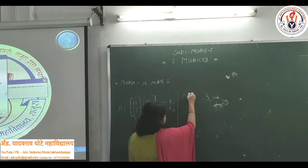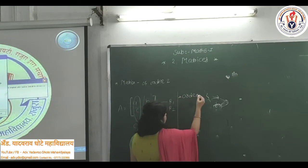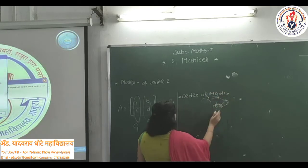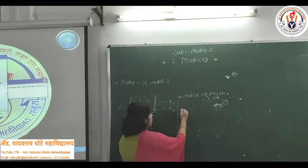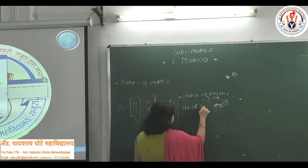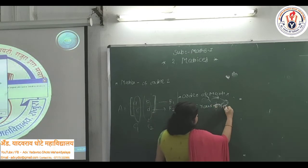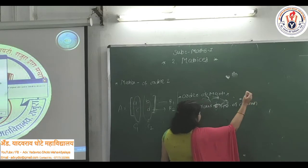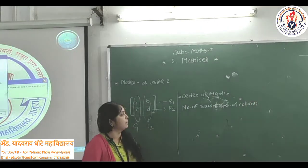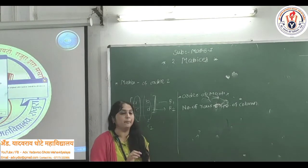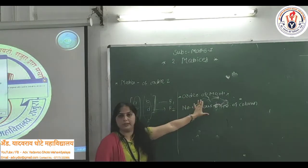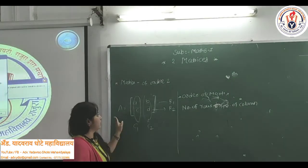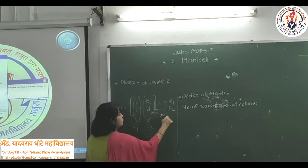Next, let us see the definition of order. The order of the matrix can be defined as the number of rows into number of columns. In this matrix, there are 2 rows and 2 columns, therefore we can write this matrix order is 2 by 2.